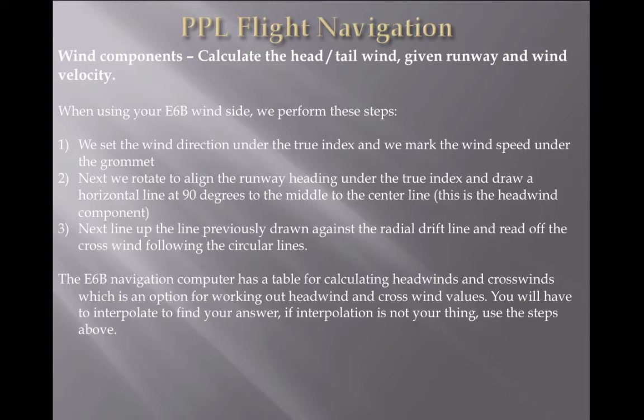When using your E6B wind side, we perform these steps. We set the wind direction under the true index — that should be at the very top when you start — and we mark the wind speed under the grommet. Next, we rotate to align the runway heading under the true index and draw a horizontal line at 90 degrees to the middle of the centre line. This is the headwind part. Then we line up the line previously drawn against the radial drift line and read off the crosswind following the circular lines.